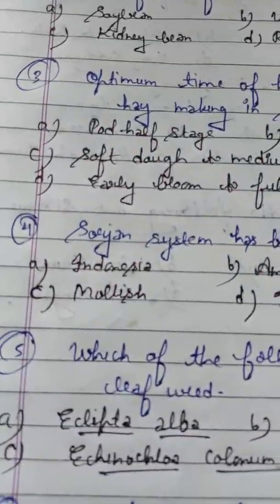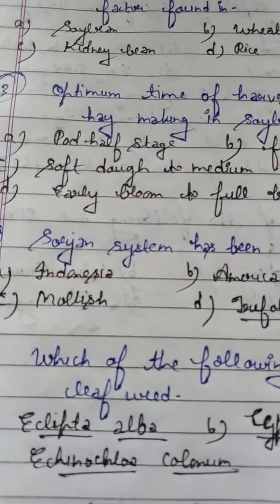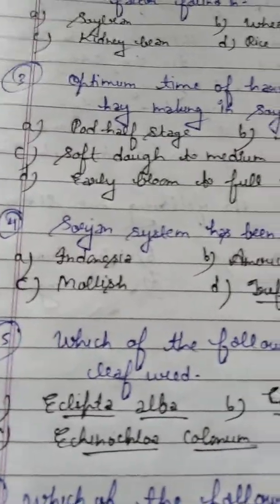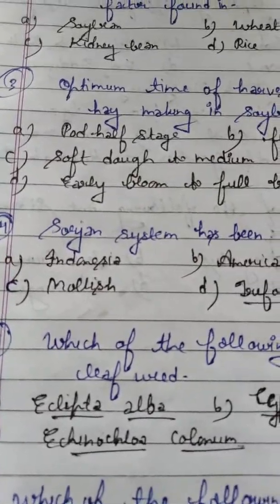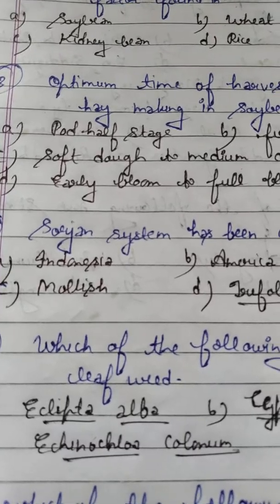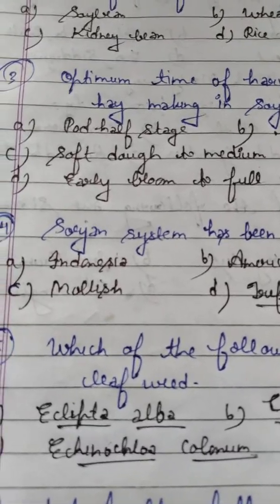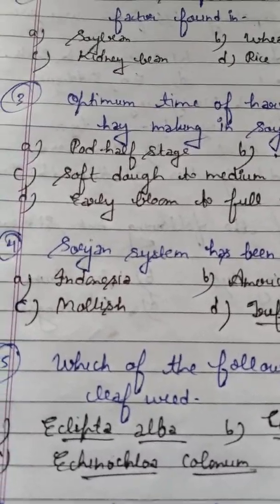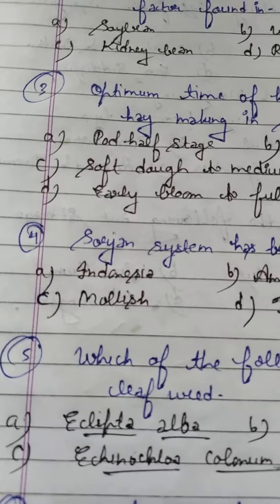Student, question number 4: The Srojan system has been developed in which country? It is like a zero tillage system. Option A: Indonesia. Option B: America. Option C: Molish. Option D: Trifolium pretense.